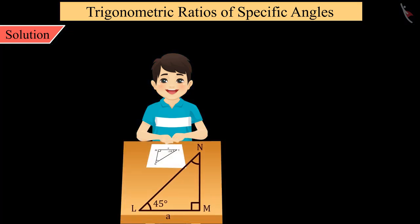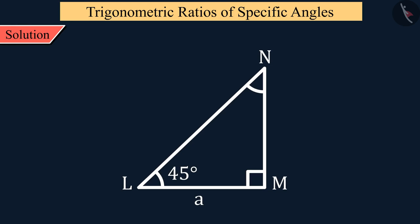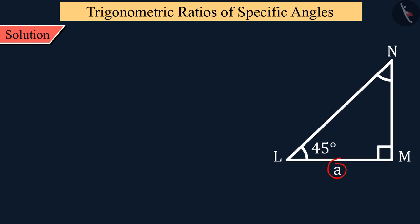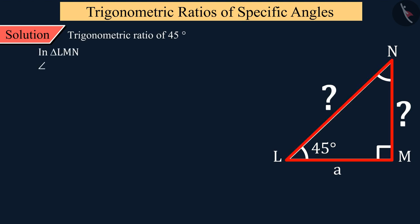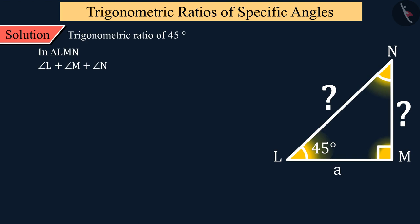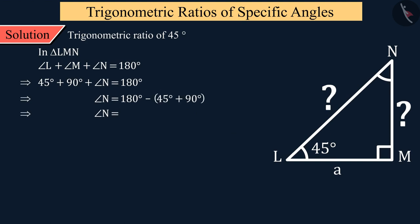Let us first learn about trigonometric ratios of 45 degree angles. Raj has a right angled triangle LMN where the value of angle L is 45 degrees and the length 'a' of the adjacent side LM is known to us. We need to measure all the sides of the triangle. We know that the sum of the three angles of a triangle is 180 degrees.